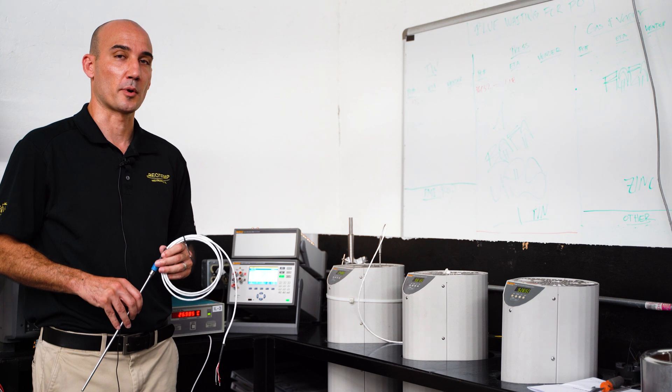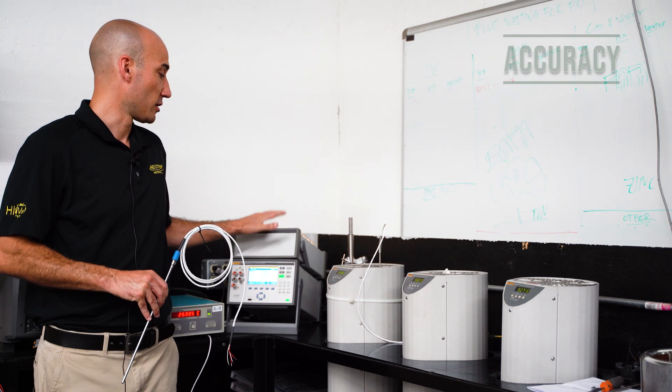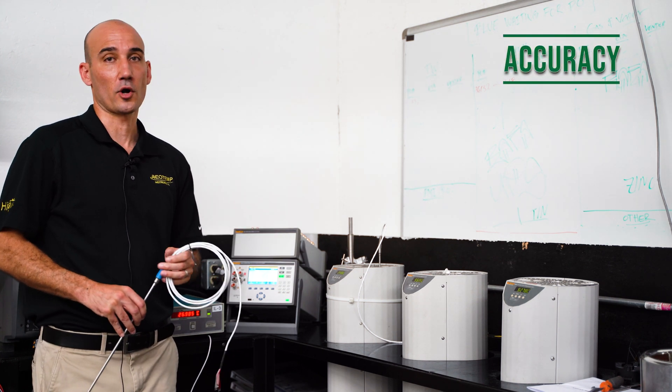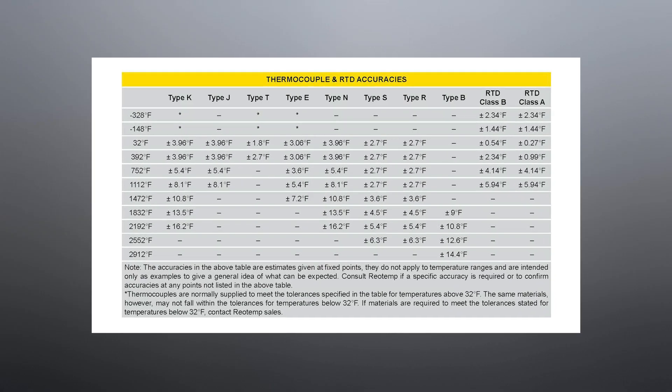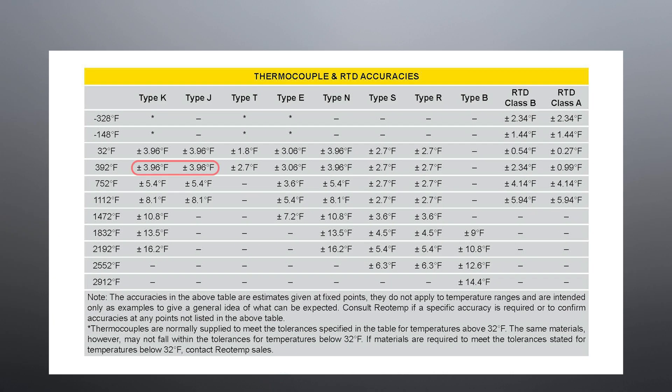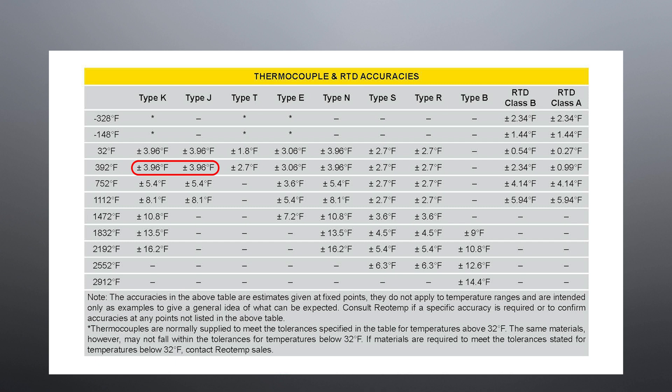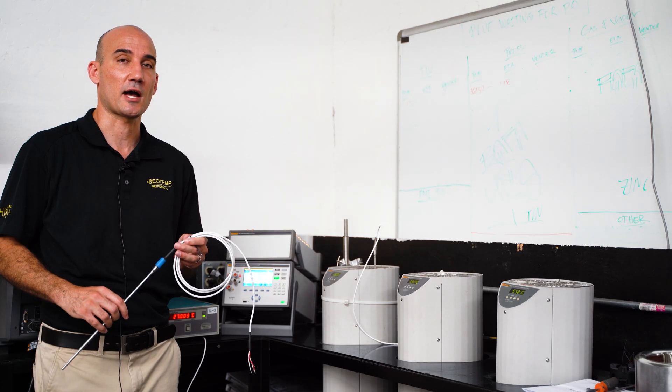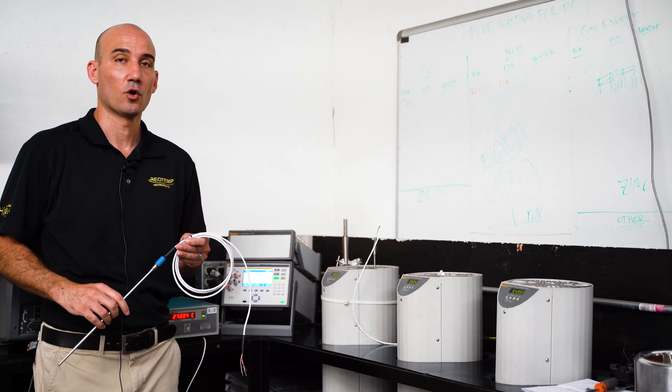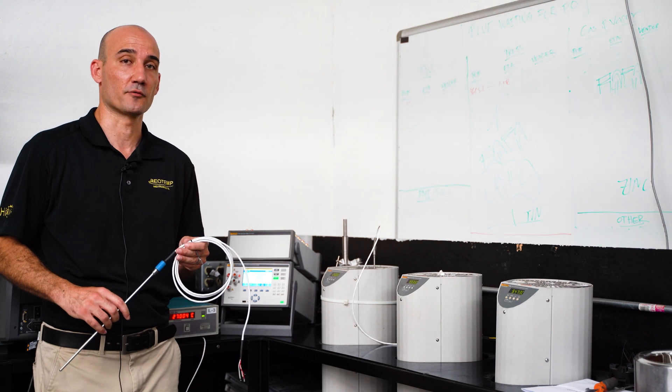Another critical comparison is accuracy. As a general rule, RTDs are more accurate than thermocouples. This is especially true at lower temperatures. If accuracy, linearity, and repeatability are your primary concerns, RTDs are a good choice. If you require better accuracy than what you see here, check out the high accuracy option for RTDs or the special limits of error option for thermocouples.